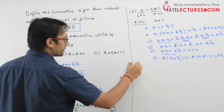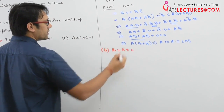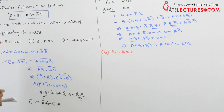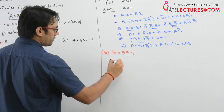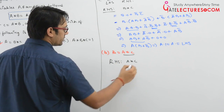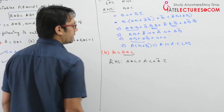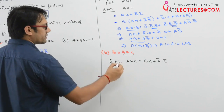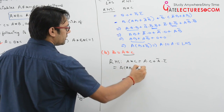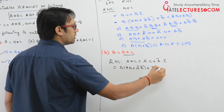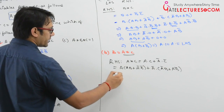Now let us take the second part: b = a★c. Is it valid? Taking the right-hand side: a★c = a·c + a'·c'. Substituting the values: a·(ab + a'b') + a'·(a'b + ab'). Expanding: a·a·b + a·a'·b' + a'·a'·b + a'·a·b'.